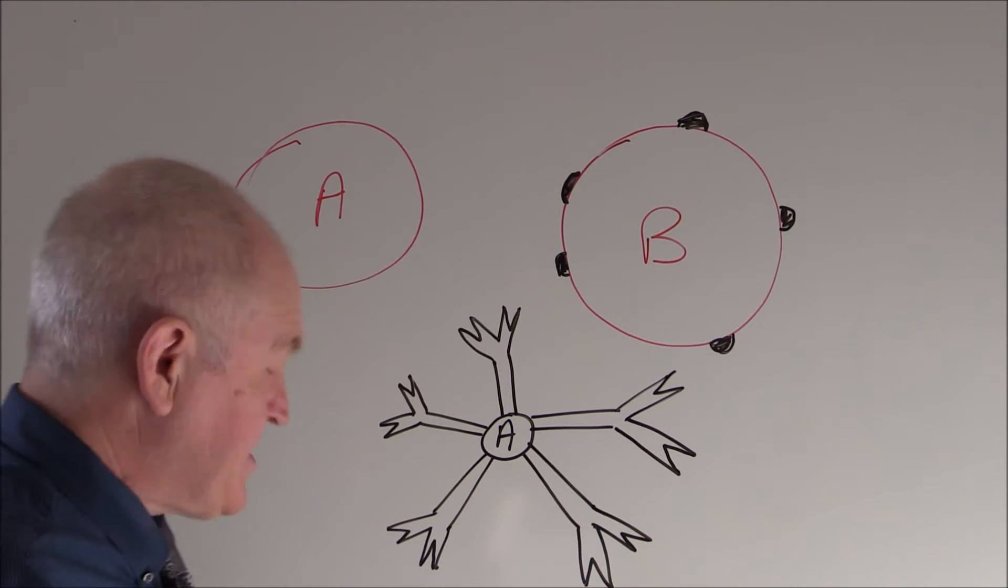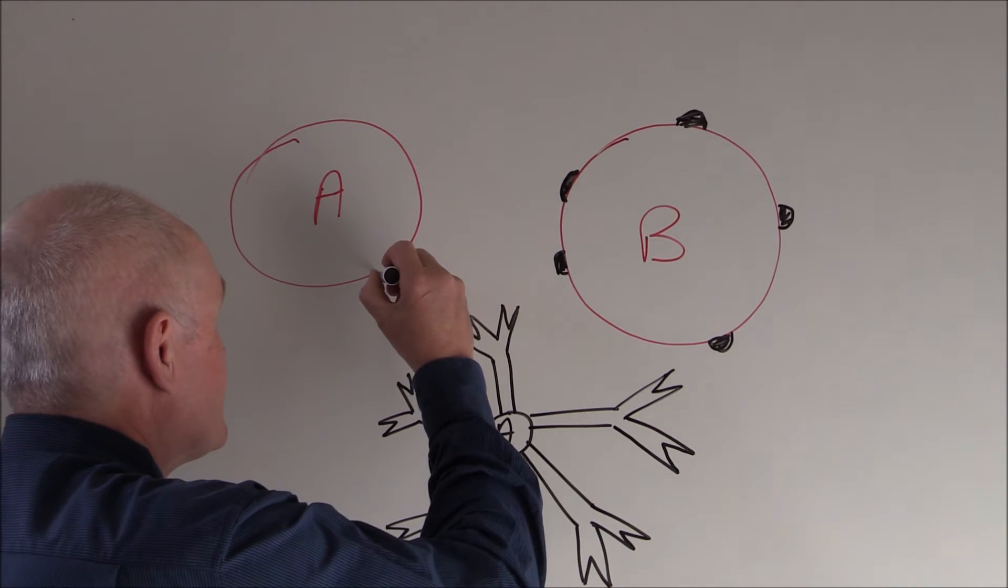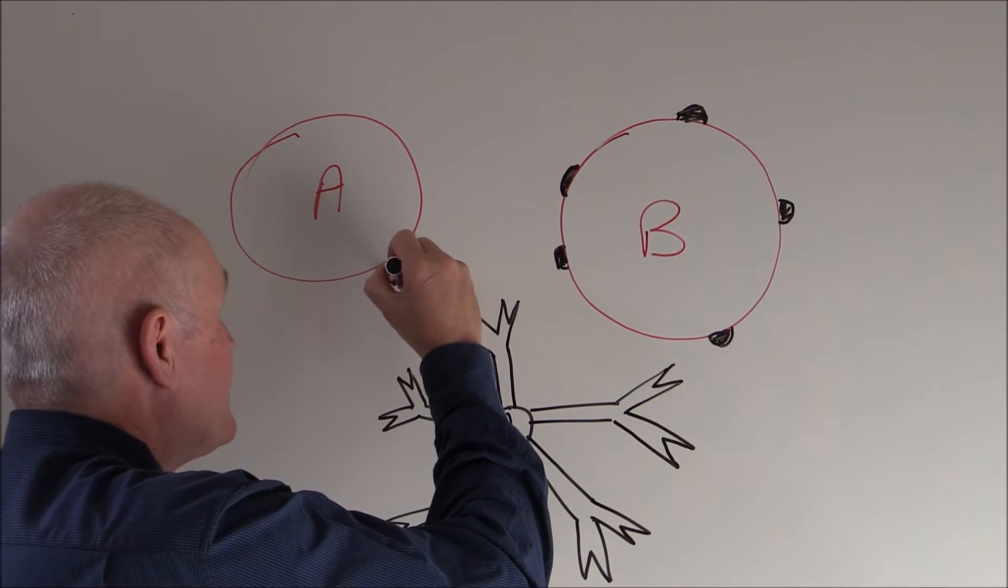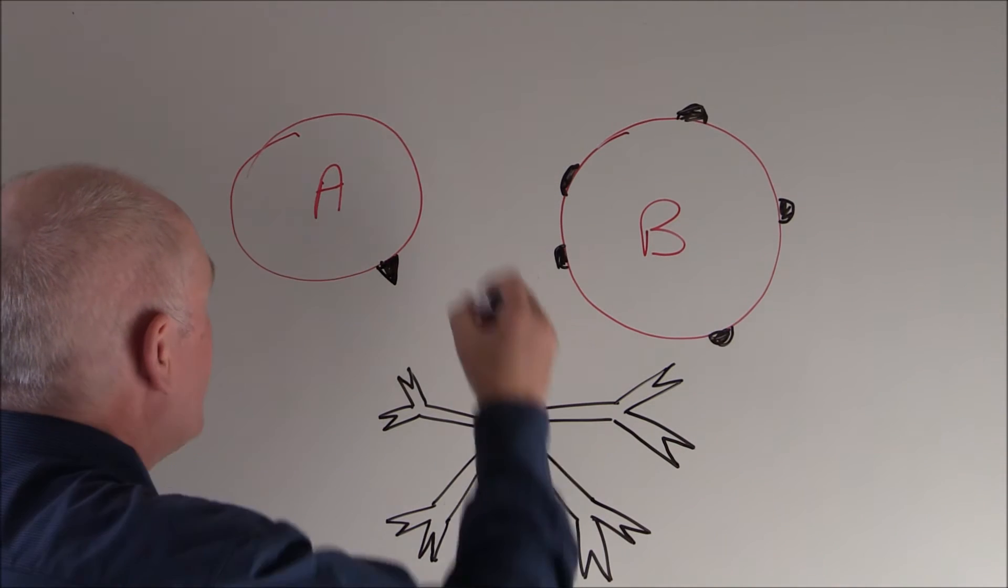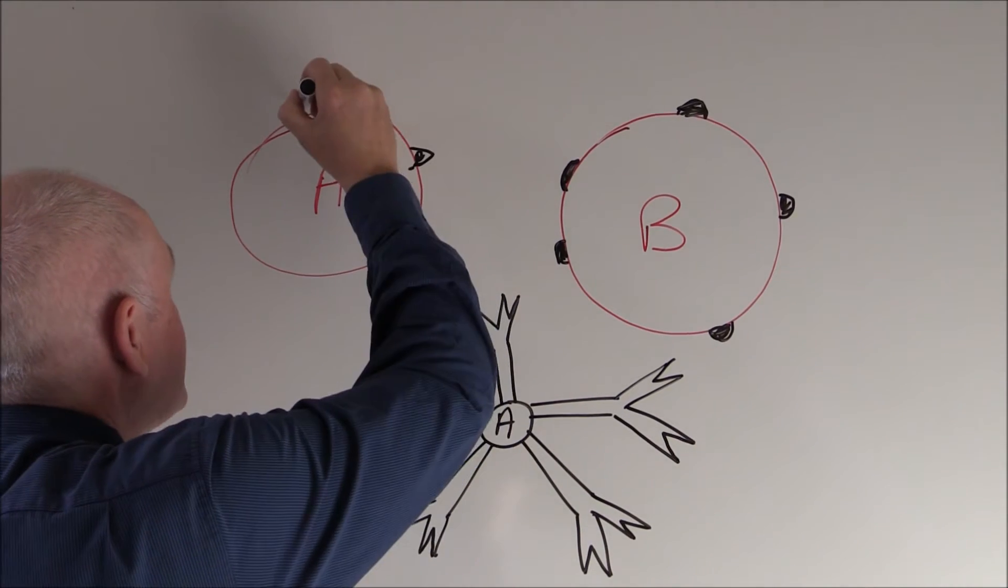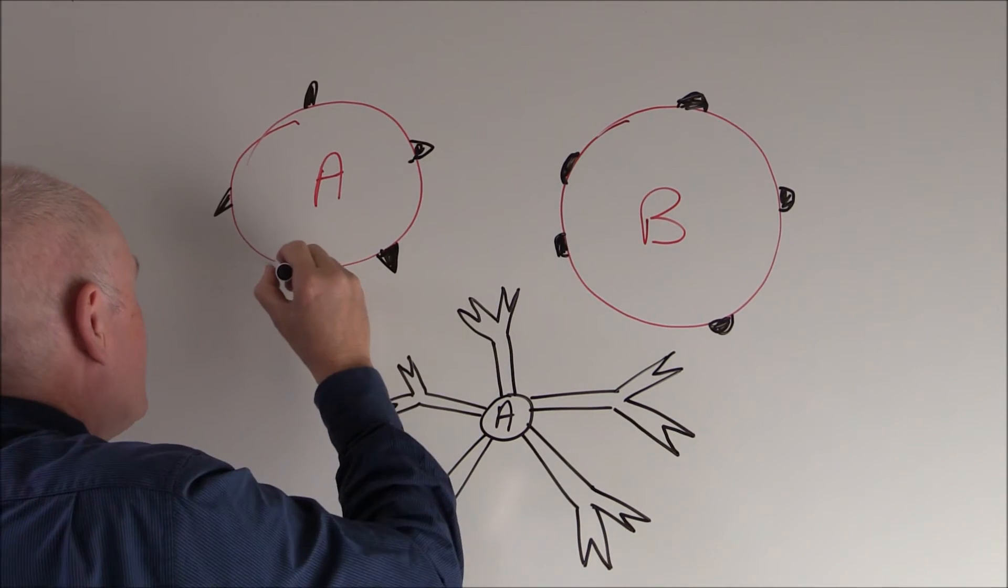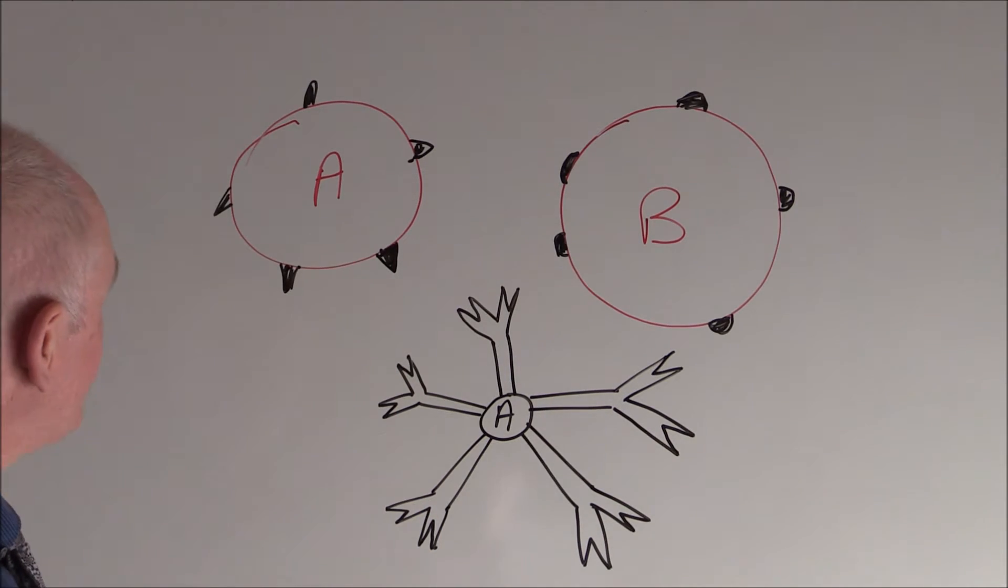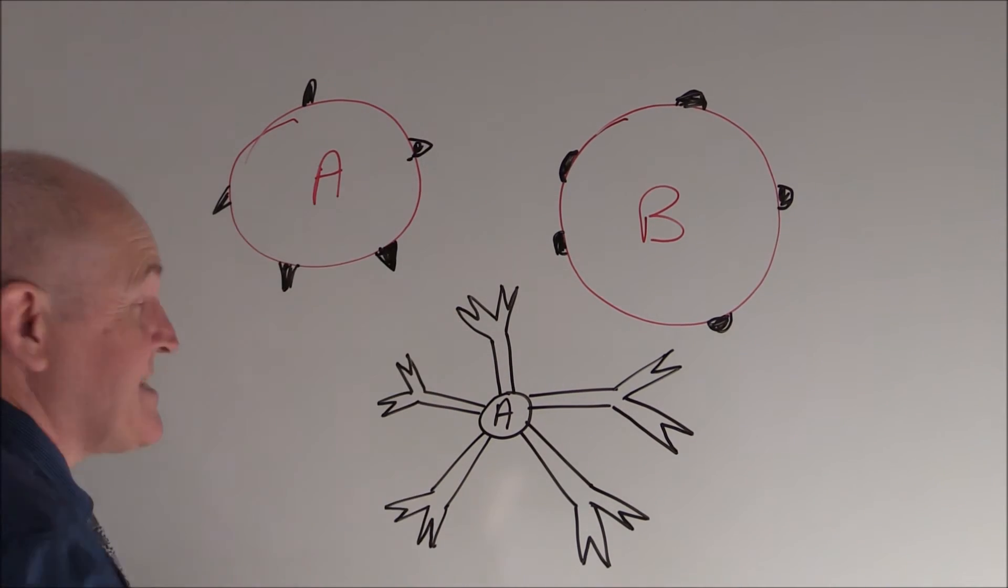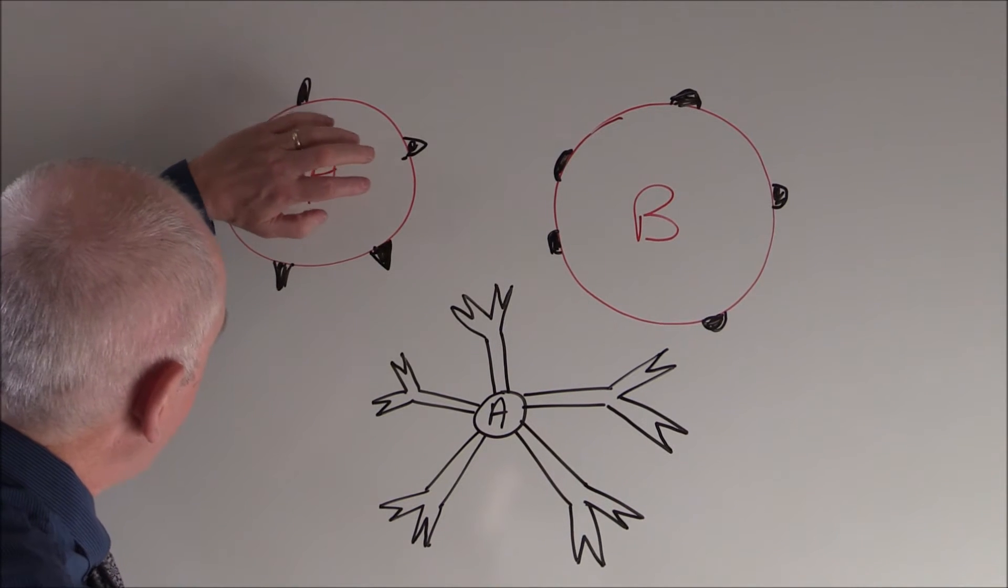That means we're introducing A erythrocytes, A red cells, into this person who is blood group B. On the surface of the A erythrocytes, on the surface of the A red cells, there are the A antigens - that's what makes it blood group A. So there we have A antigens on the surface of the red cell. We've introduced these as donor's blood, but we've got it wrong and we've given blood group A by mistake.